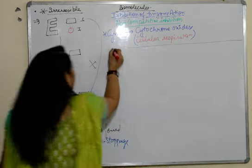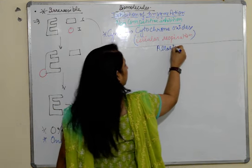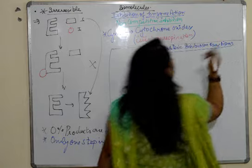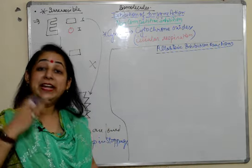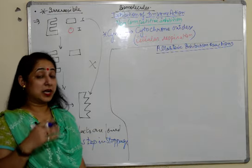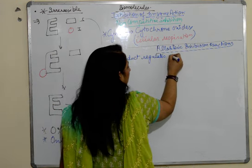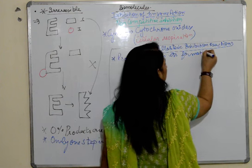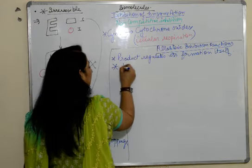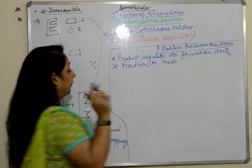Now we have the third type of inhibition reaction, that is allosteric inhibition. Allosteric inhibition reactions are the ones wherein feedback mechanism takes place, or you can say that the product itself is responsible for regulating its formation. The product is self-regulating its formation. The product regulates its formation itself. I'll explain how. The product forming is itself regulating and feedback takes place here. It's also called as feedback mechanism. So what happens here? For example, glucose.